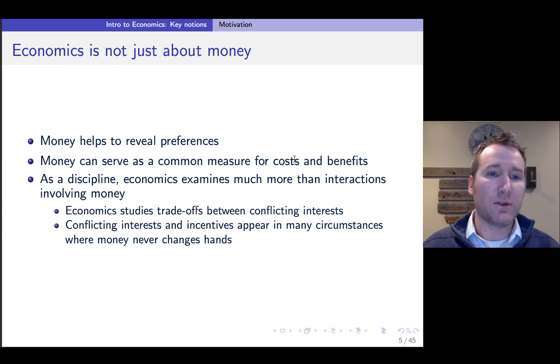It serves to remind you that, again, economics is not just about money. That's useful to help reveal preferences. It can serve as a common measure for costs and benefits, but it's not all about that. Because at its core, it's about trade-offs between conflicting interests and incentives and studying those in a quantifiable way in order to predict what the expected outcome should be.